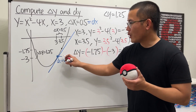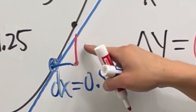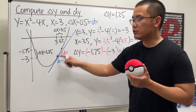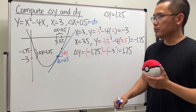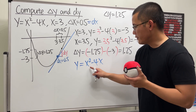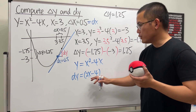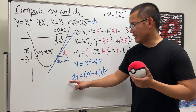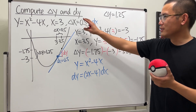When we move horizontally by dx and go up to the tangent line, that vertical distance is precisely dy. The slope of the tangent line is dy/dx. So to compute dy for y = x² - 4x, we differentiate to get dy = (2x - 4)dx. You can divide both sides by dx to get dy/dx, which is the derivative.